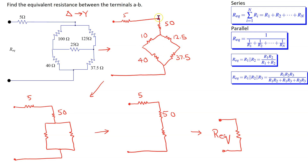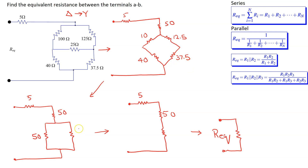In this circuit, the 10 ohm and the 40 ohm resistors are in series and can be replaced by a single 50 ohm resistor. Similarly, the 12.5 ohm and the 37.5 ohm resistors are in series and they can be replaced by another 50 ohm resistor.